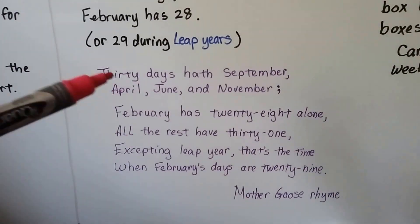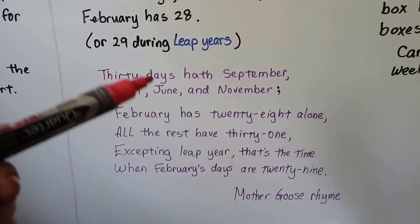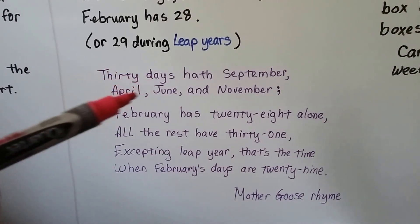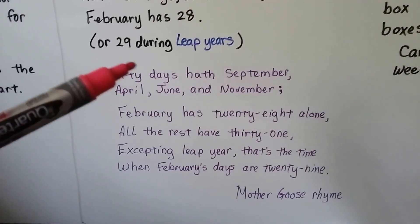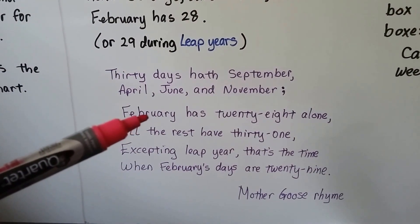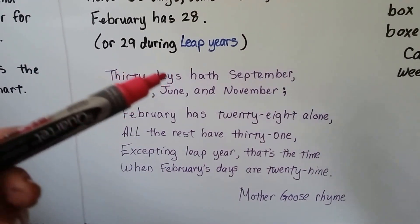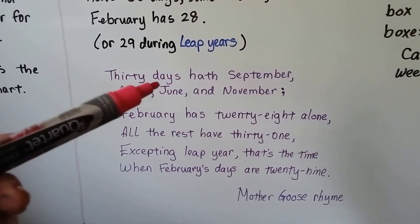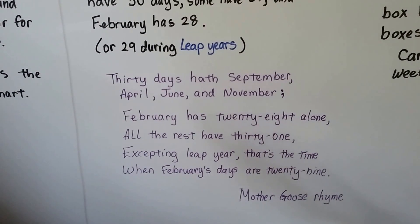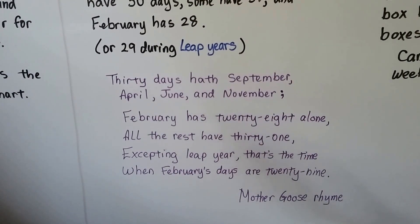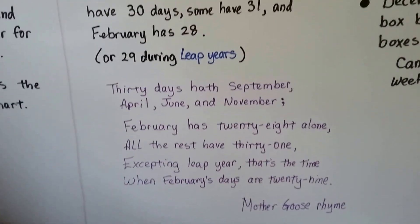Really, just memorizing the first part — 30 days has September, April, June, and November — is enough. Because you can remember February has 28, and if these are the ones that have 30, if it's not a February, they all have 31. So just memorizing the first part can help you.